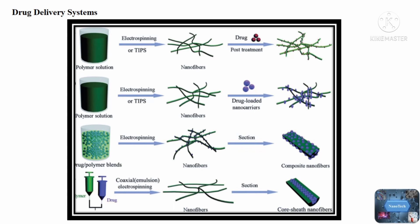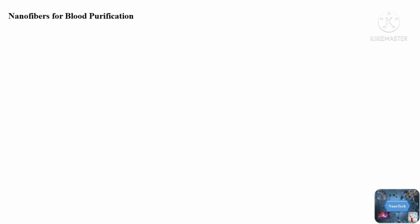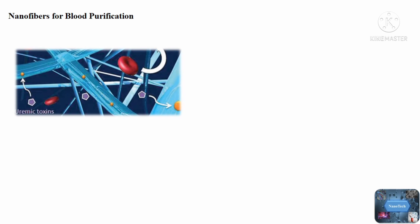Nanofibers for blood purification: kidney failure is a life-threatening disorder in which the kidneys are unable to remove enough waste — such as urea, creatinine, and uric acid — and excess fluid from the body. To eliminate uremic toxins from the blood, researchers developed a zeolite poly(ethylene-co-vinyl alcohol) nanofiber membrane. Zeolites are capable of selectively adsorbing uremic poisons, and this membrane is compatible with the human body.